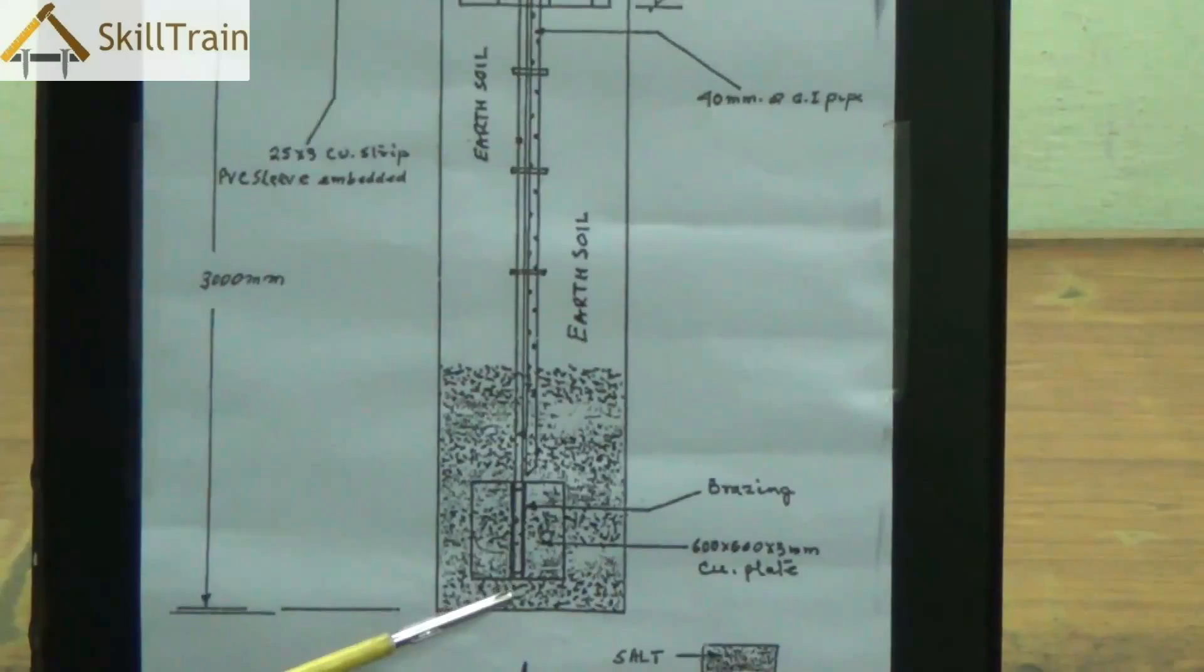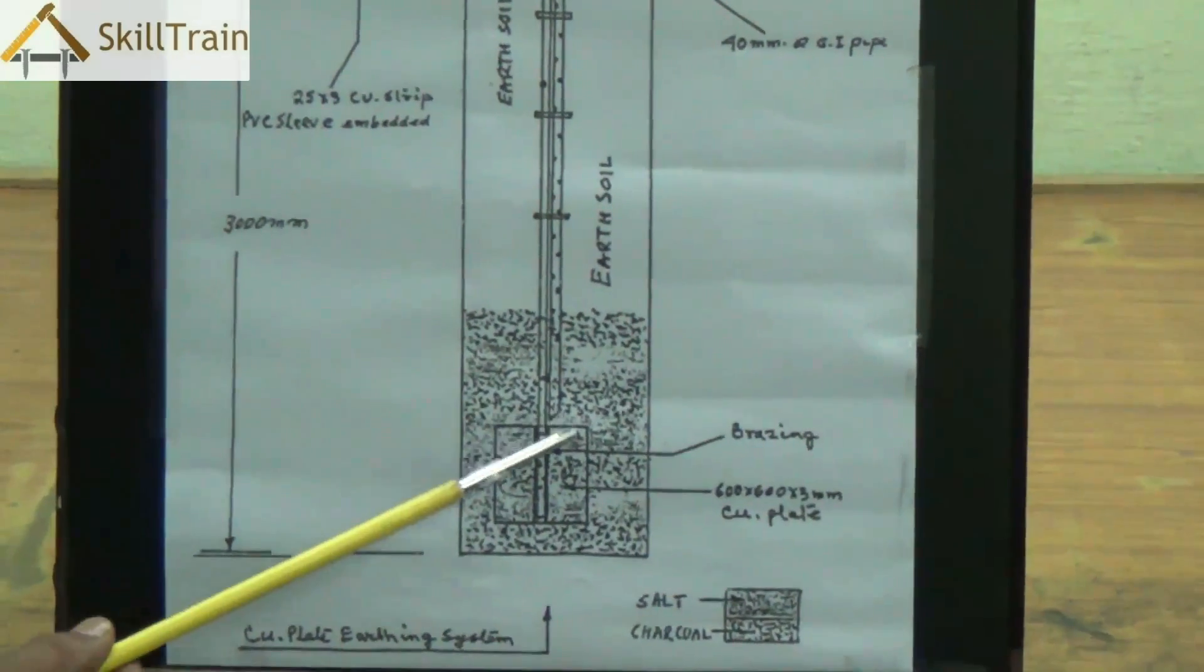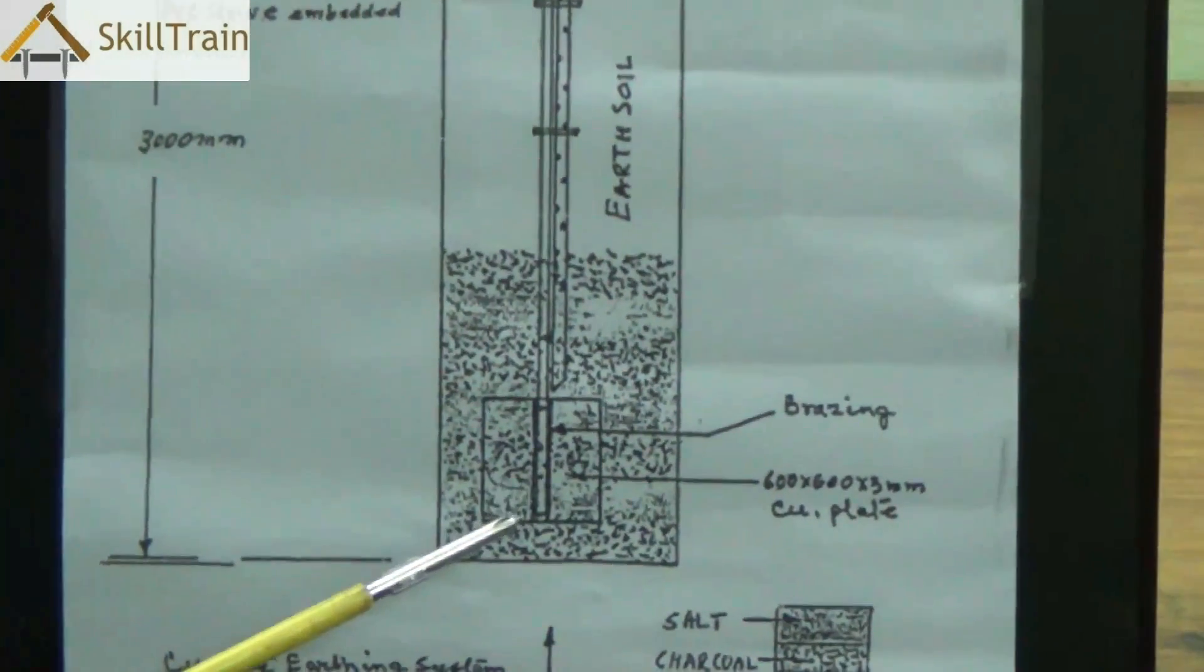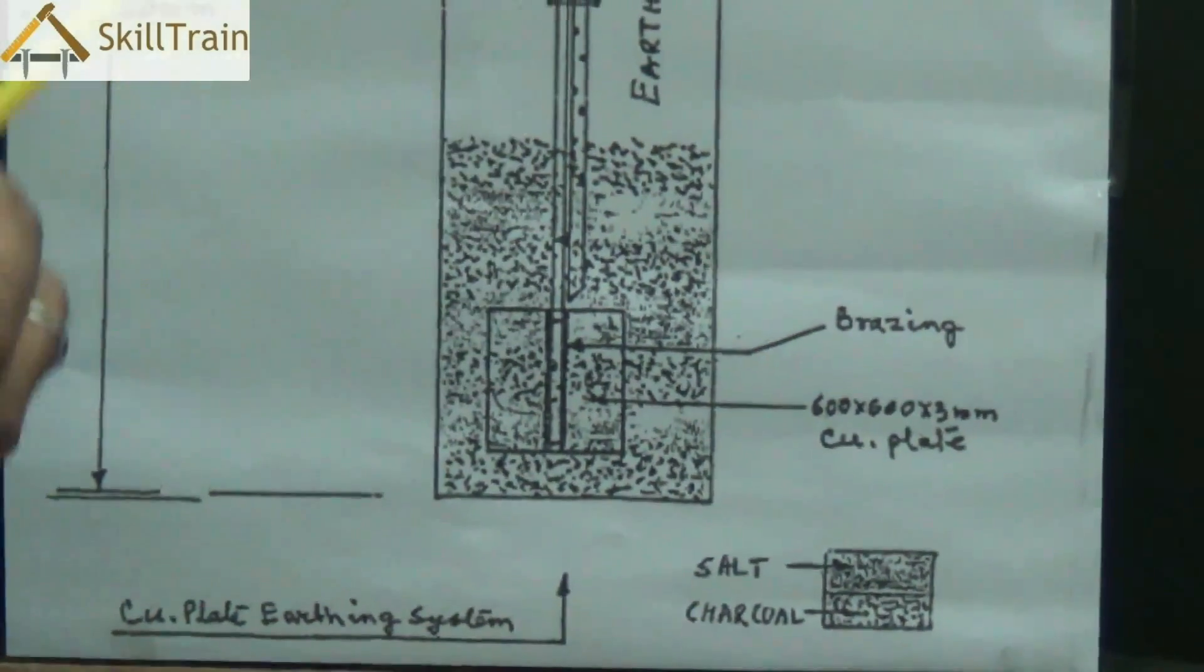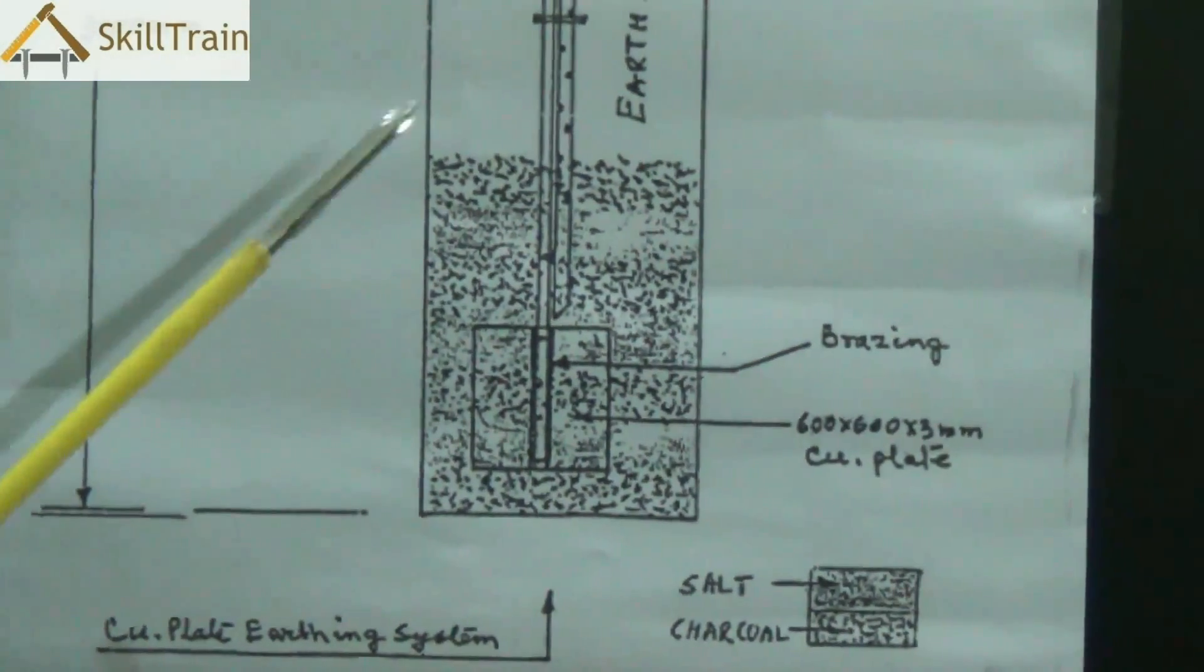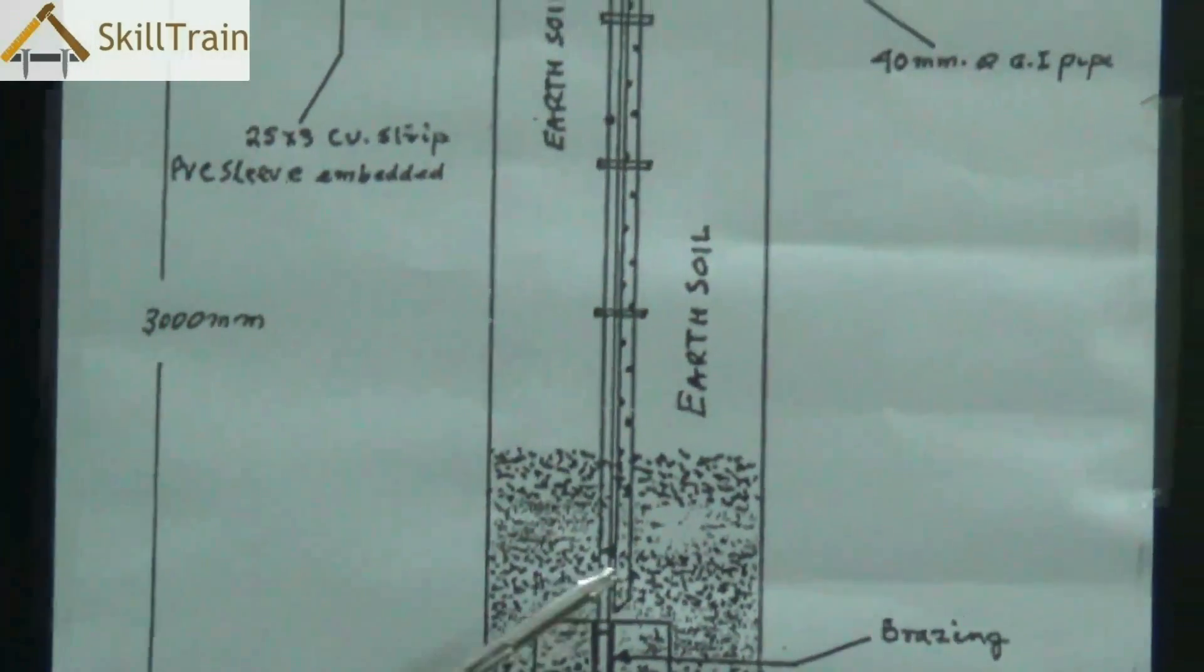So whenever there is leakage current that travels through the copper wire and reaches the copper plate and because of the salt in it it dissipates the entire current thereby ensuring that the current or the electricity is grounded to the earth.